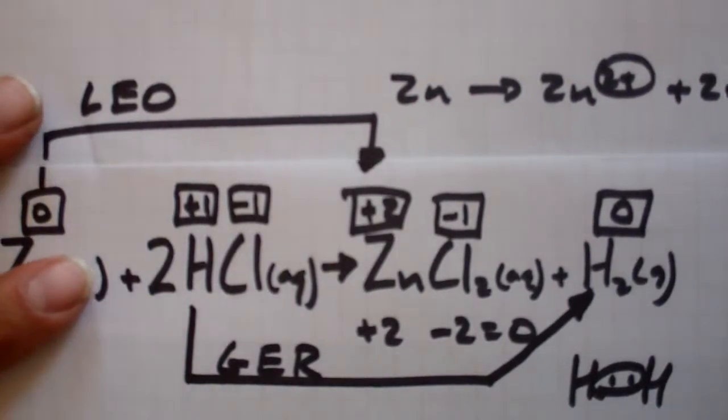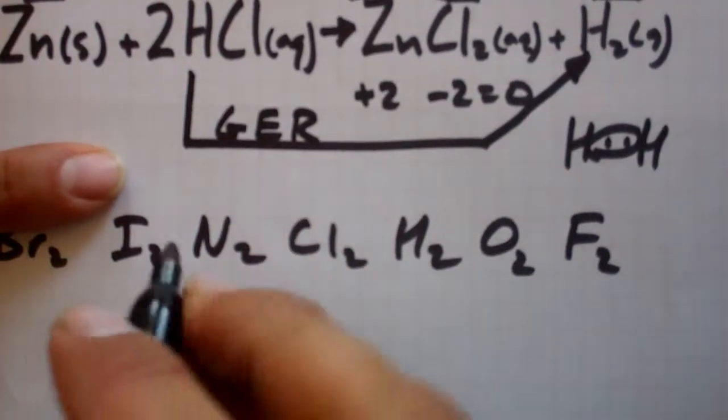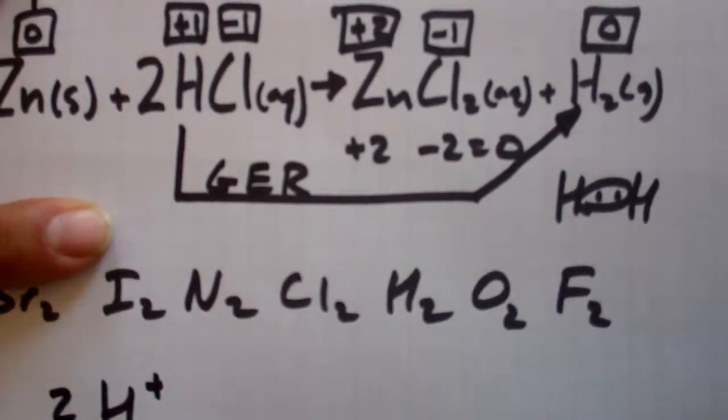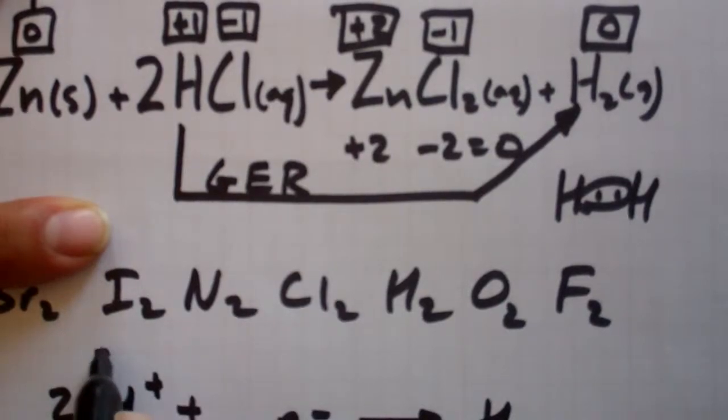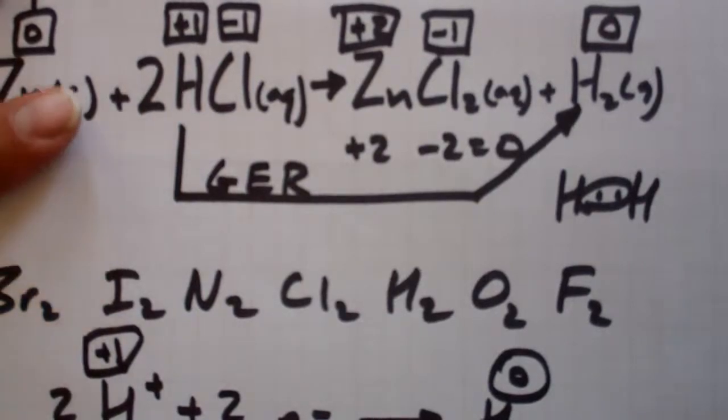And really, if you wanted to write the equation out, it's going from H+, and there's two of those, plus a certain number of electrons to give you H2. It goes from plus 1 to 0, and there's two of those, so really it's two electrons.